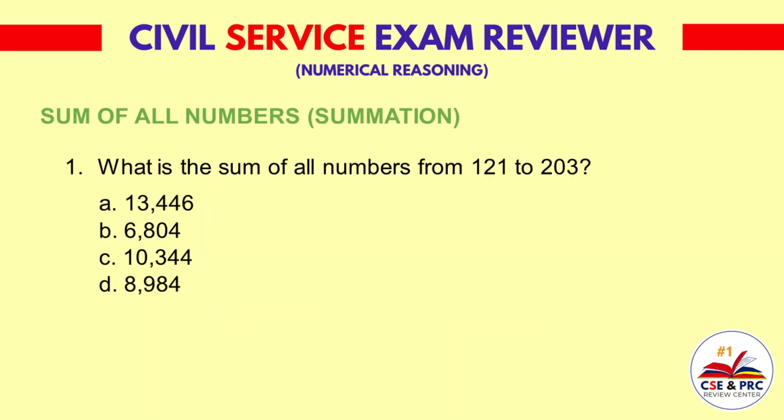Question 1: What is the sum of all numbers from 121 to 203? a. 13,446  b. 6,804  c. 10,344  d. 8,984